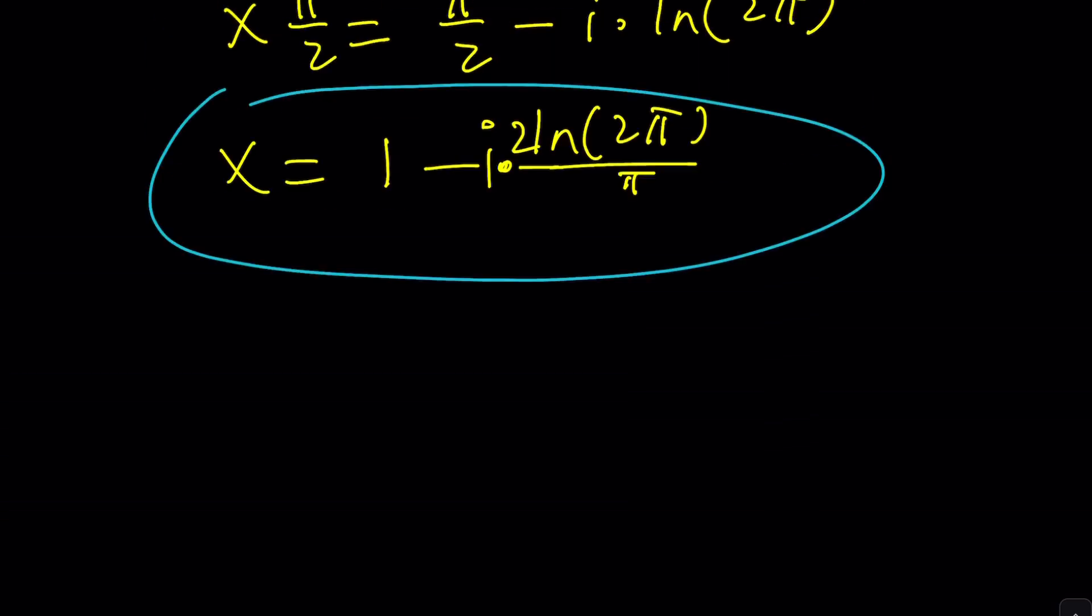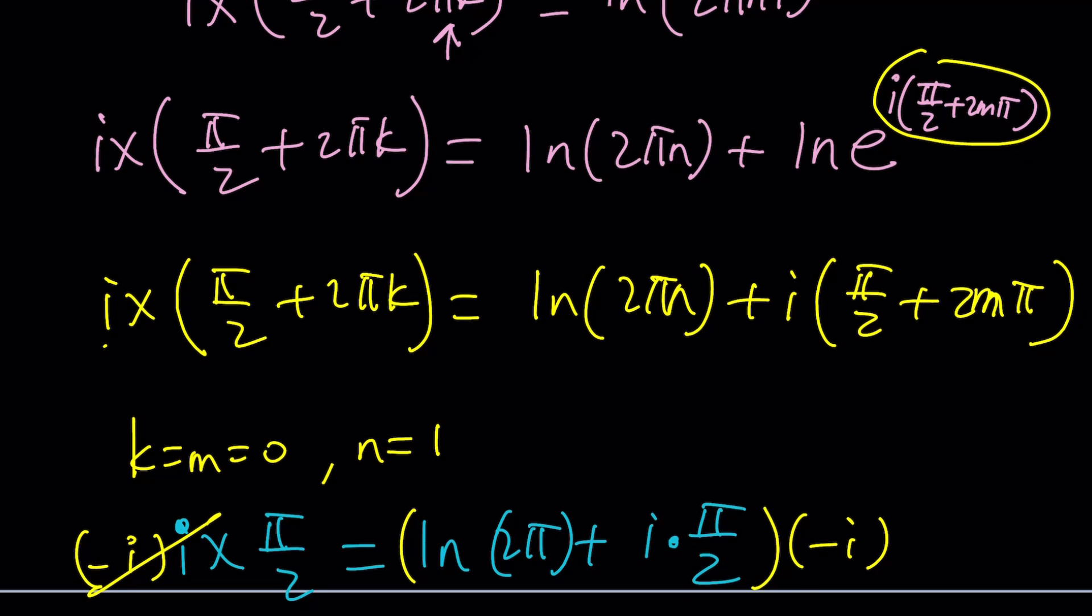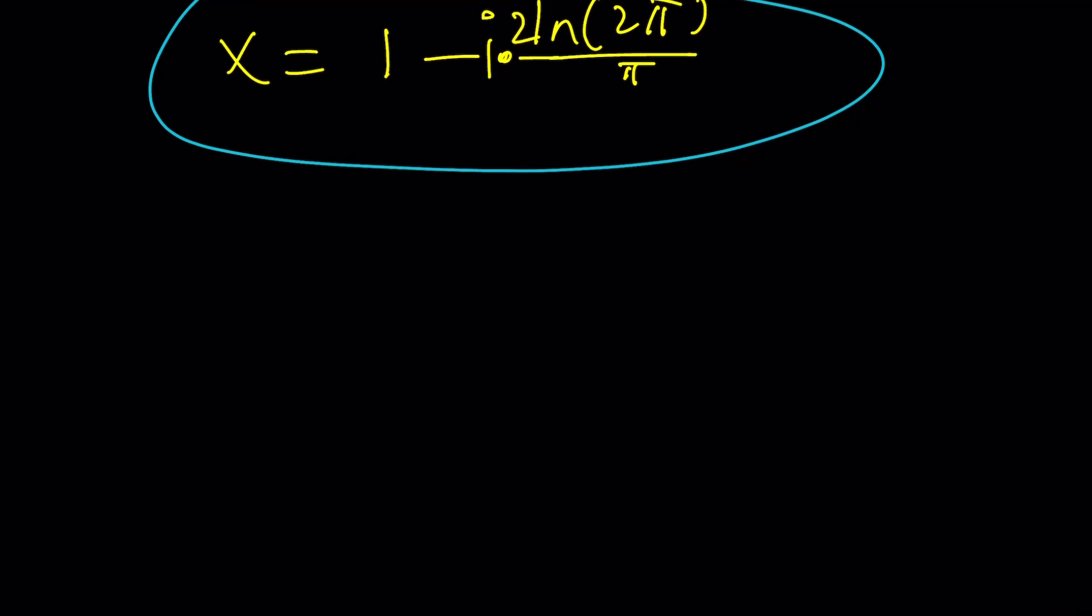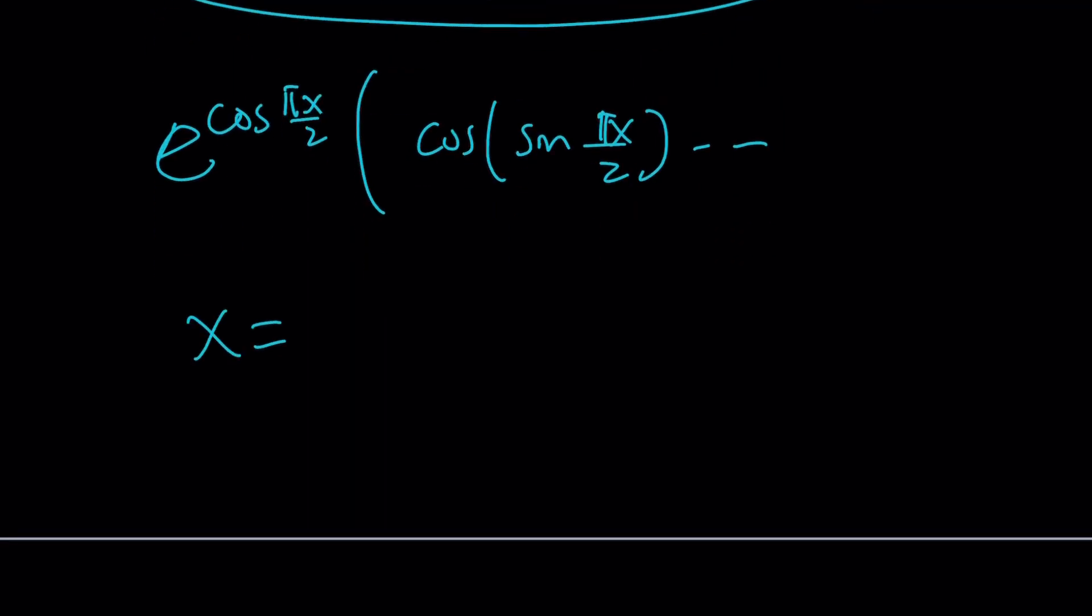Now, let's go ahead and take a look at what Wolfram Alpha gave us. It gave us something like e to the power cosine pi x over 2 multiplied by cosine of sine of pi x over 2, so on and so forth. Or x could be something like approximately 0.63662 multiplied by 6.2832, which is 2 pi n sub 2, i log or ln 2 pi n1. And that's pretty much it. n sub 1 and n sub 2 are integers.